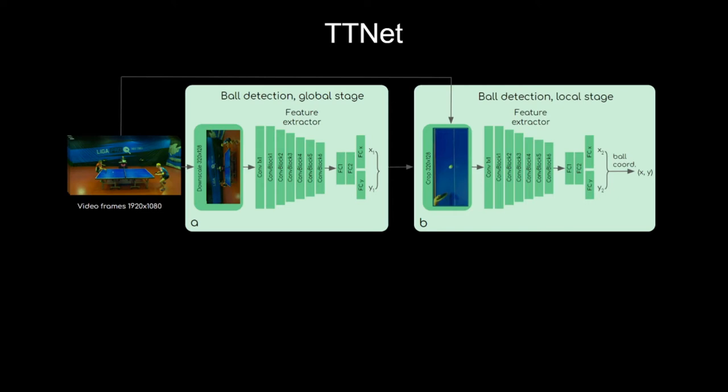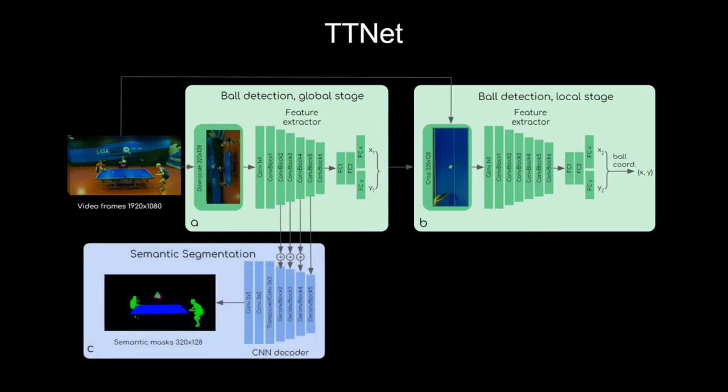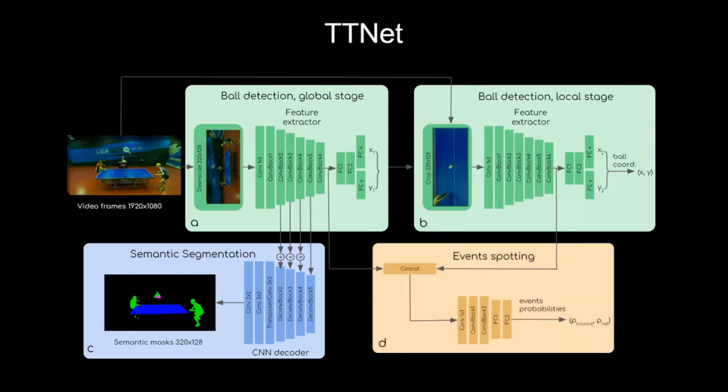In the same time, feature maps from the first encoder are used in the decoder semantic segmentation branch. And finally, features from the global and local stages are combined for the event spotting branch. Now, let's consider details of every branch.